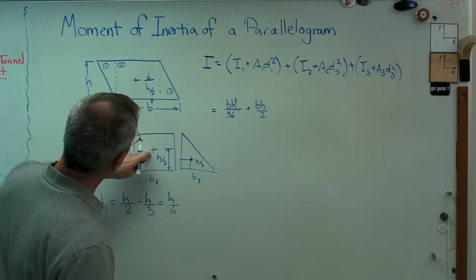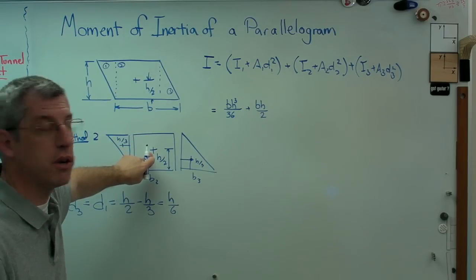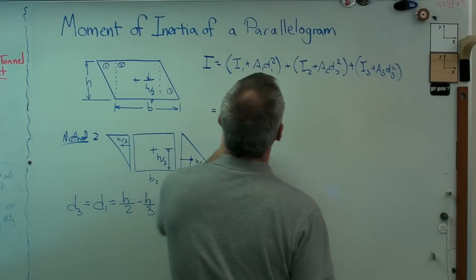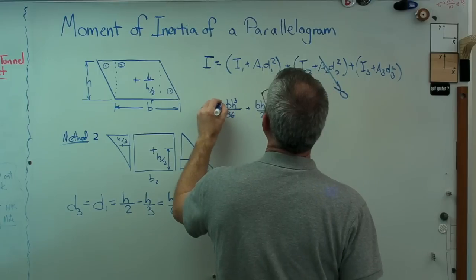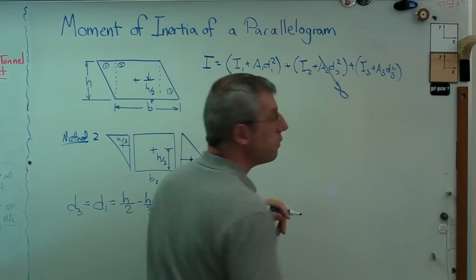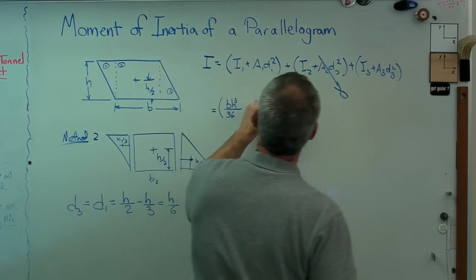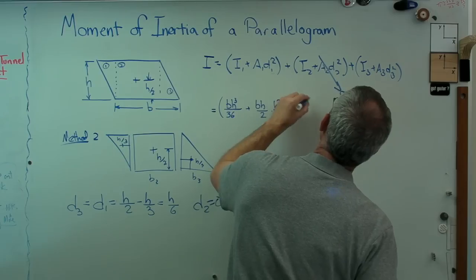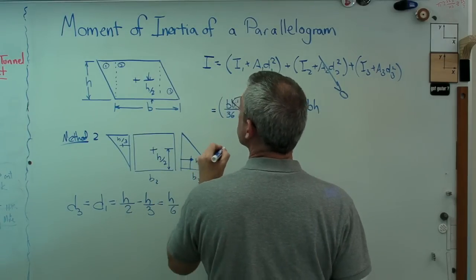And not only is that d1, that's also d3. d2 now - the distance from the centroid of the overall shape to the centroid of that square - zero, they're in the same place. So d2 equals zero. Let's do that. So I put that in there times d1 squared - it's h over 6 squared, so it's h squared over 36. Plus, I've got to make sure I label these.